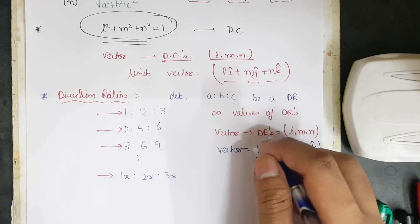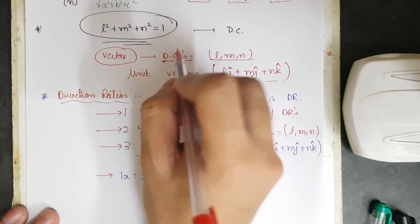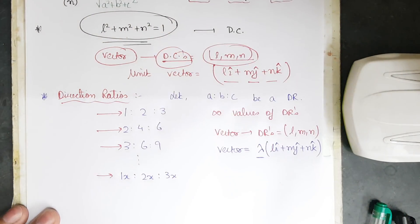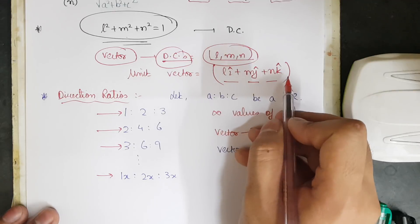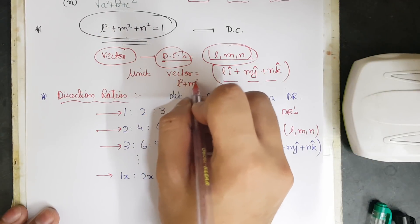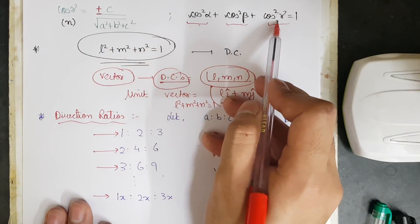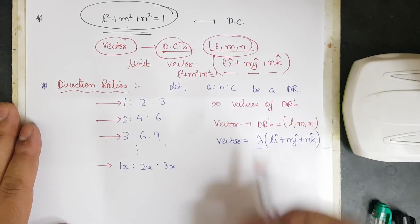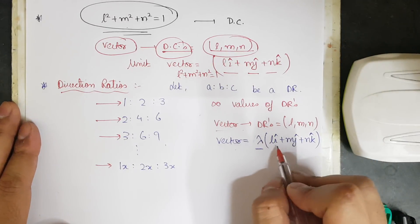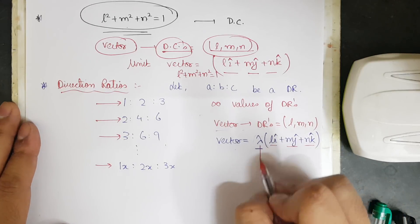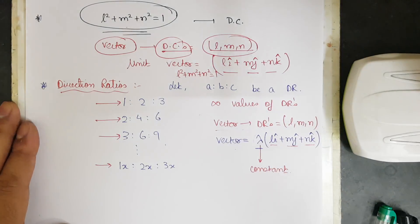So to summarize: for a vector whose DCs are l, m, n, the unit vector along that direction is l·î + m·ĵ + n·k̂, and l²+m²+n²=1. If a vector's DRs are given as l, m, n, then the vector is given by λ(l·î + m·ĵ + n·k̂) where λ is any constant. These are two basic things you should know.